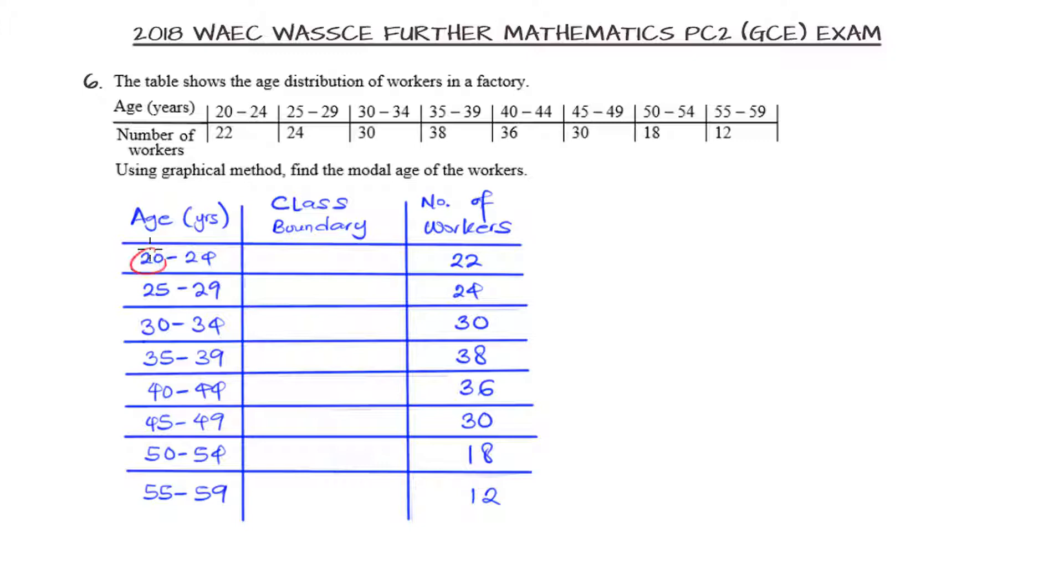If we tabulate the information that we are given, we need to get the lower class boundary and the upper class boundary. We subtract 0.5 from the lower class boundary and add 0.5 to the upper class boundary, so that in this case we have 19.5 to 24.5 as our class boundary. The first entry is the lower class boundary, the second entry is the upper class boundary. We do that for each data that is indicating the age of the worker.